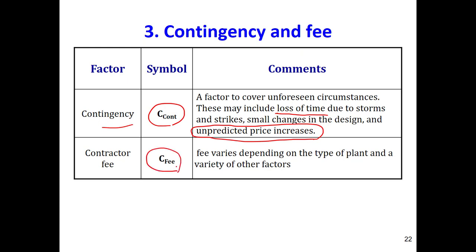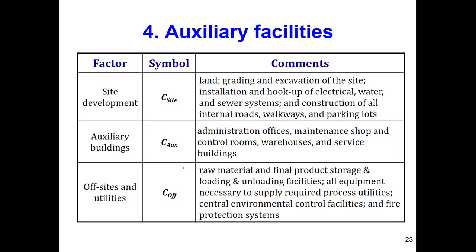Contractor fees (C_fee) depend on the type of plant and other factors and must also be considered. The fourth and final category is auxiliary facilities, which includes site development (C_site), auxiliary buildings (C_aux), and off-sites and utilities (C_OUP).